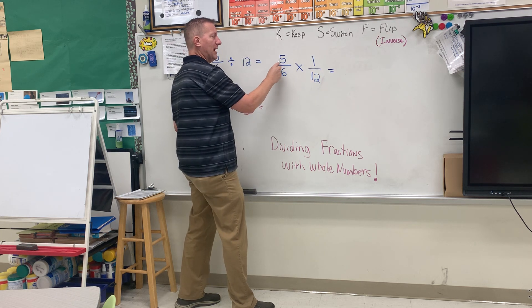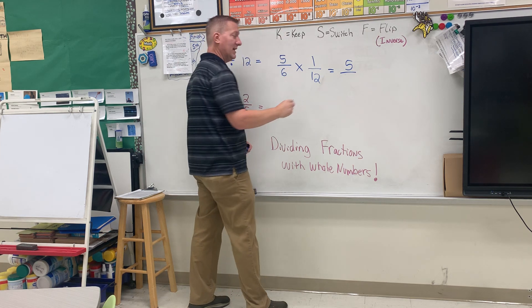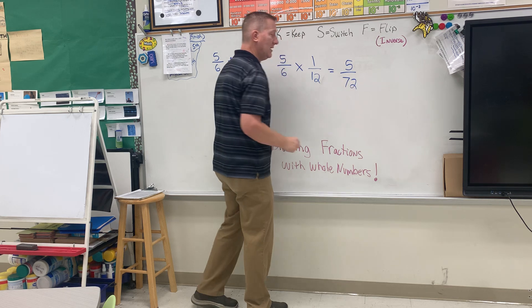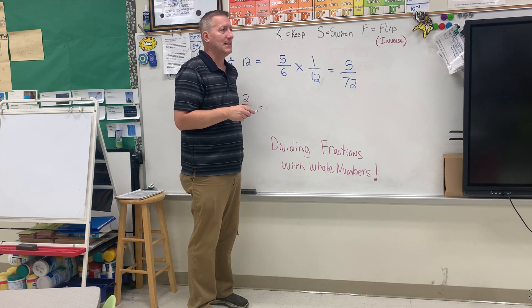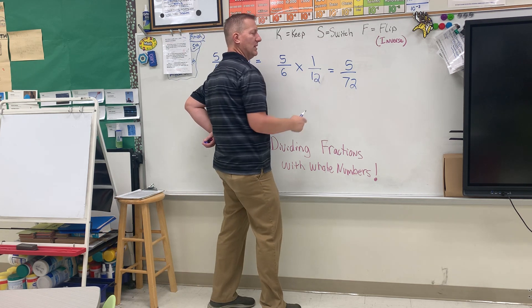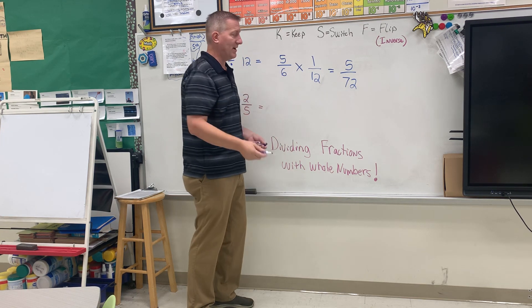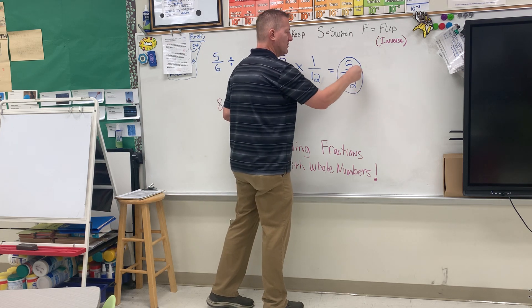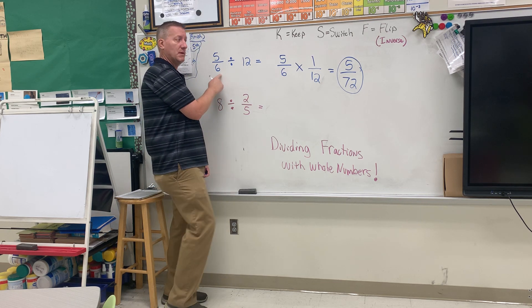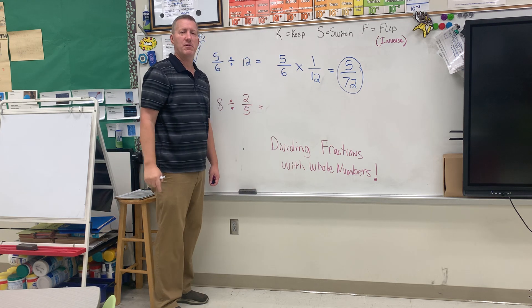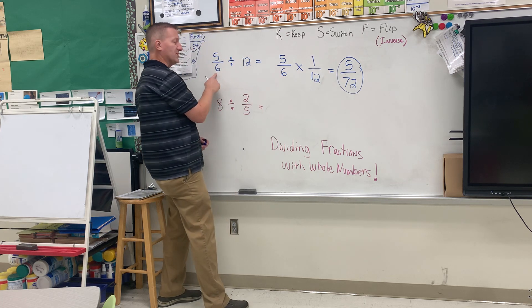Then you simply multiply: five times one is five, six times 12 is 72. We're thinking, does that reduce down? It doesn't, because five — only one and five go into it — and five does not go into 72. So there's our answer. Notice if you start with a fraction, look what your answer is — your answer ends up being a fraction. So you start with a fraction, you end with a fraction.